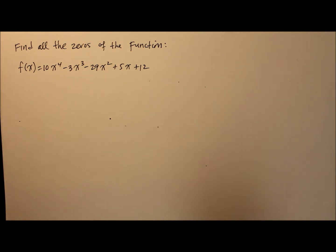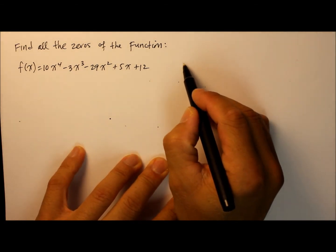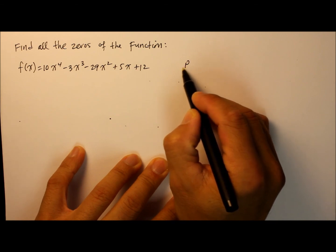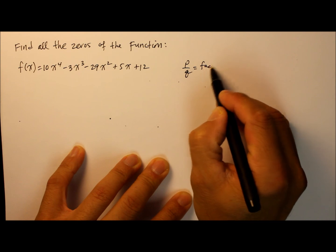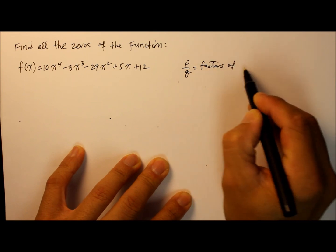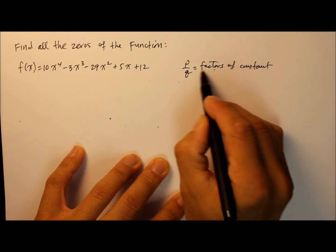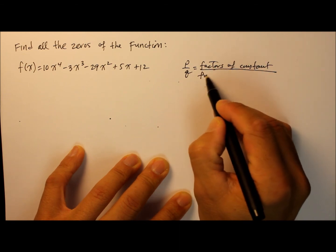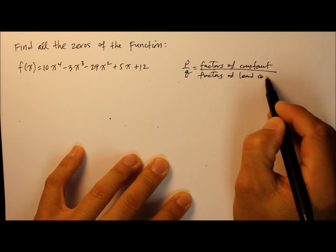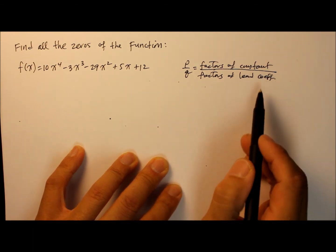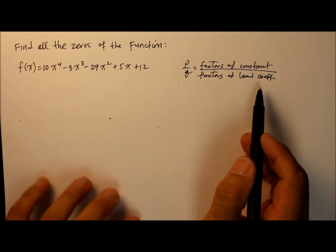So we have to find the four factors, the four zeros, that are the factors of this function. And on the last instruction, we talked about rational roots theorem, the rational zero theorem, where they are in a form of p over q.